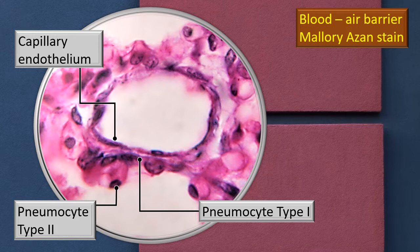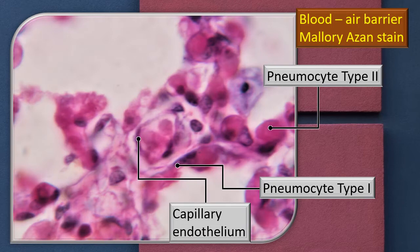In another area at higher magnification, you can see how close the interface is between the capillary endothelium and the pneumocyte. The pneumocyte type 1 and capillary endothelium are virtually plastered to each other, appearing as if there is only one single basement membrane — it cannot be resolved as two individual components. A little away, pneumocyte type 2 is shown. This is important because the secretion here — namely surfactant — originates from pneumocyte type 2, which may also help in repair by dividing and converting into flat pneumocyte type 1 cells.